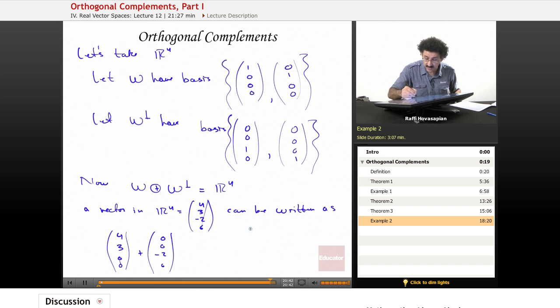And what's nice about this representation, this direct sum representation, is that this representation is unique. So when I write a particular vector as a direct sum of two individual subspaces, the way that I write it is unique. There's no other way of writing that.